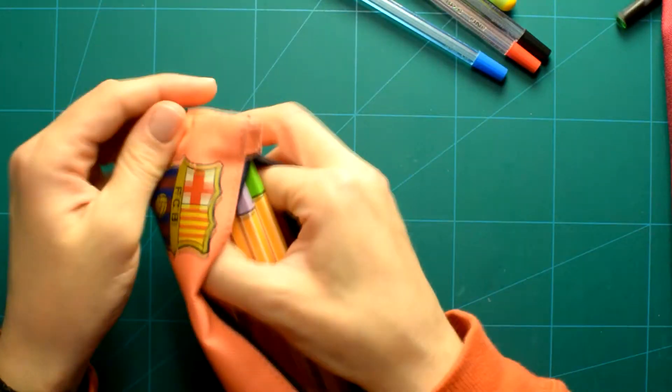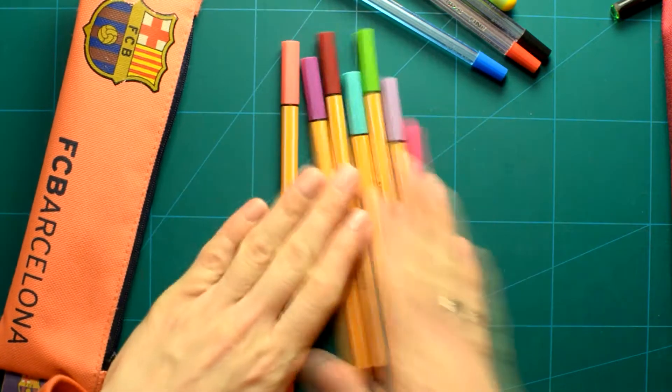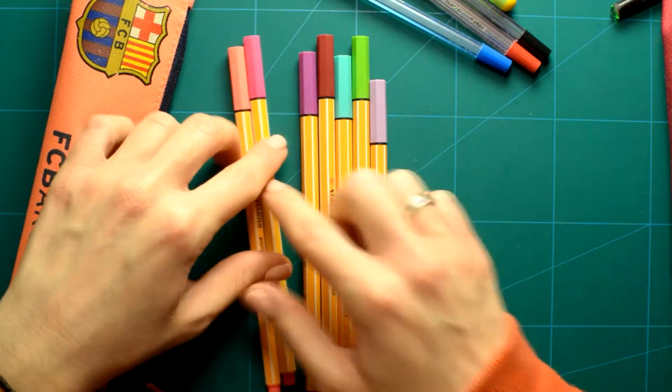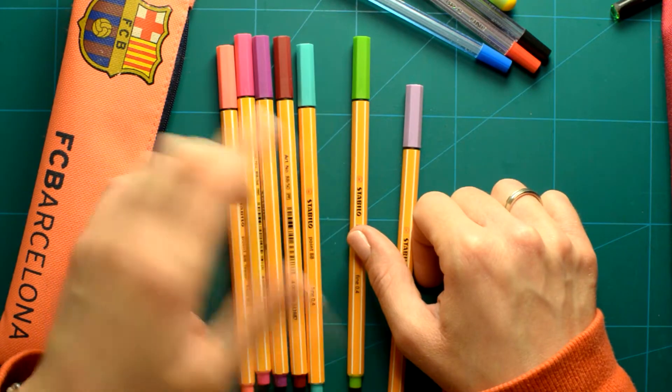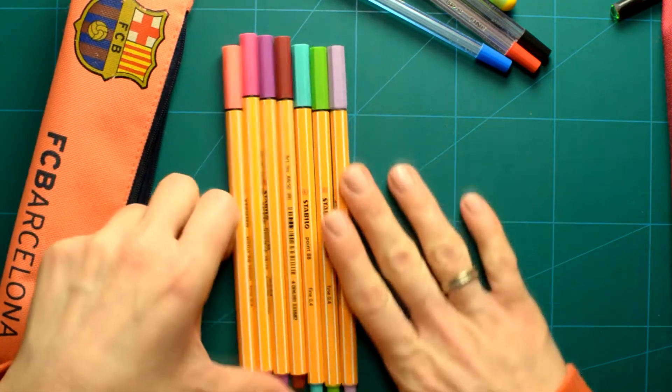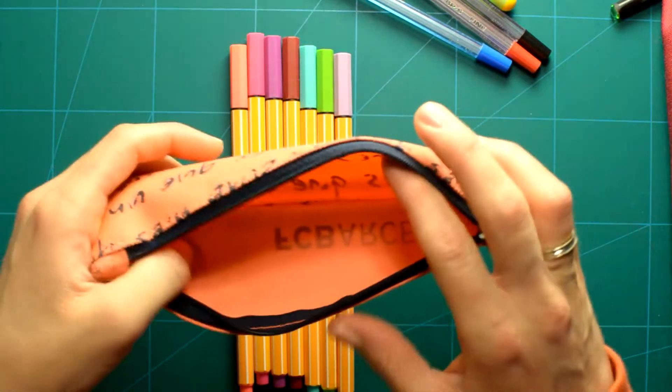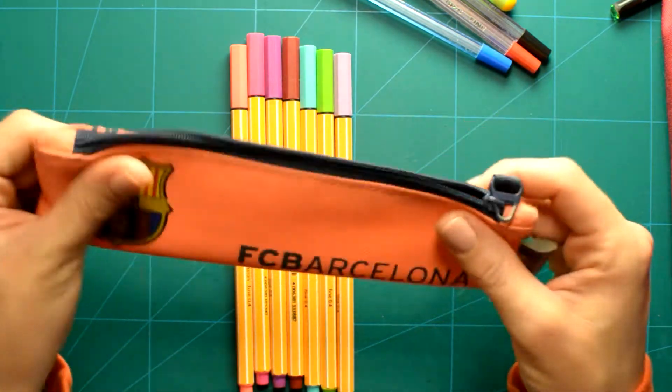And I have a few more colors. These are the Stabilo ones. I've got a neon pink, hot pink, purple one, deep red, light blue, green and light purple. And this is everything I carry with me. I usually have a small sharpener, but I don't know where it is at the moment.